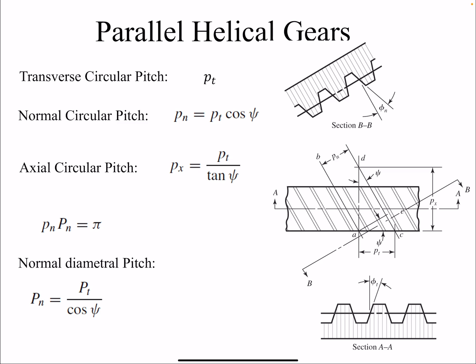For helical gears, in addition to the pressure angle we had for spur gears, multiple other angles come into play. One of them is the helix angle. For spur gears we had only one circular pitch, but for helical gears we have three different circular pitches or diametral pitches: the transverse, normal, and axial. The transverse is shown by index pt, and the normal is pt times cosine of the helix angle. Circular pitch is the small p and diametral pitch is the large P.